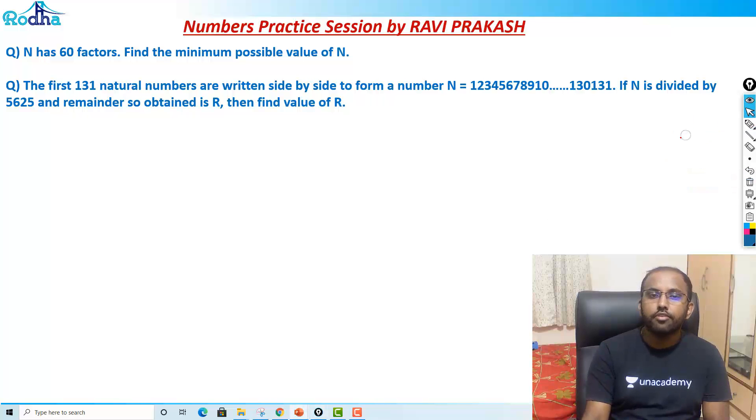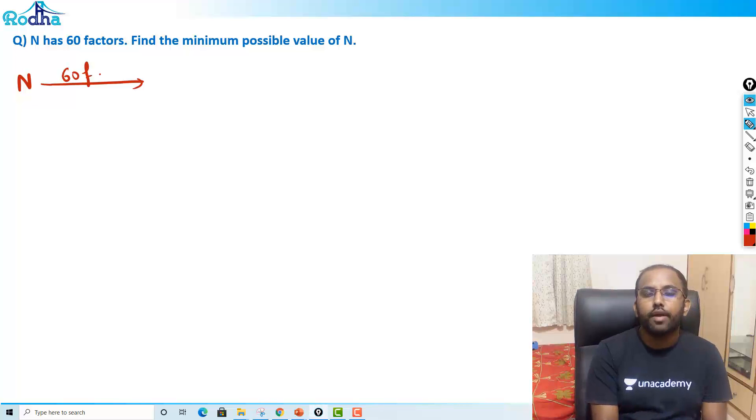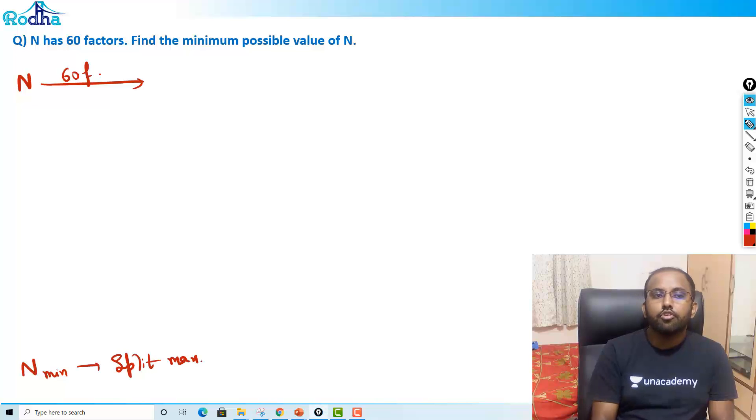Let's start with our question now. Look at this first question guys. N has 60 factors. This I gave in the last video - finding minimum positive value of N. We have discussed this concept. Basically if N has got 60 factors, so what we'll do here: if I have to find a minimum positive value of N, I'll try to split into maximum terms. For finding N minimum, we try to split into maximum.